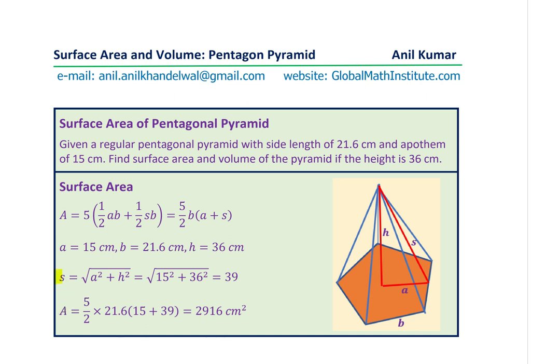So slant height S in this particular case will be A square plus H square square root. So writing the values, we calculate the slant height as 39 units.